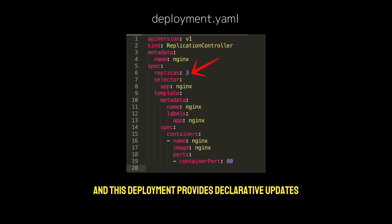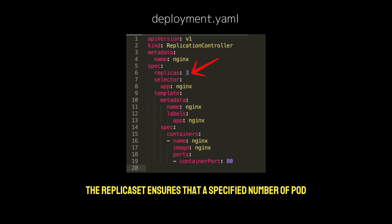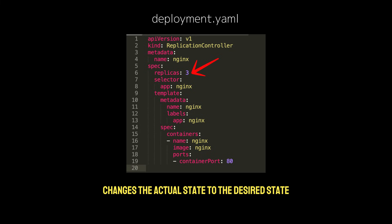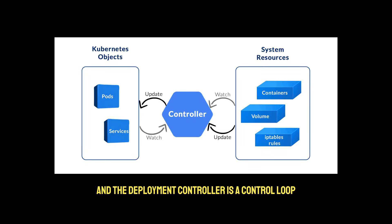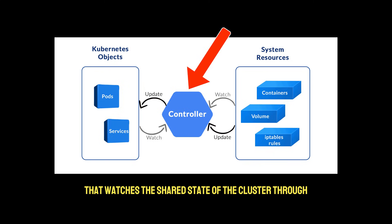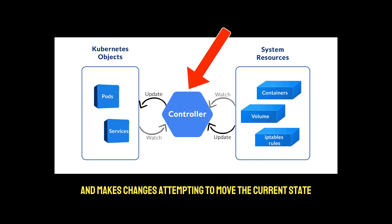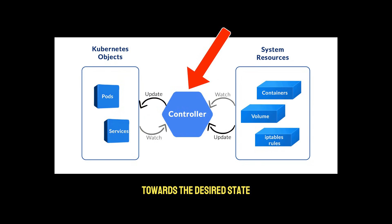A deployment provides declarative updates for pods and replica sets. A replica set ensures that a specified number of pod replicas are running at one time. You as a developer describe the desired state in a deployment, and the deployment controller changes the actual state to the desired state at a controlled rate — it's a control loop that watches the shared state of the cluster through the API server and makes changes attempting to move the current state towards the desired state.